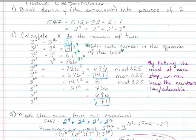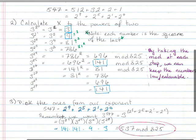Now, the next step is to pick the ones from our exponent. Now, if you recall, our exponent, which was 547, which we broke down into this. Well, remember we want 3 to the 547, which I'm going to rewrite as 3 to all this. I just took this, plugged it in here instead of 547.